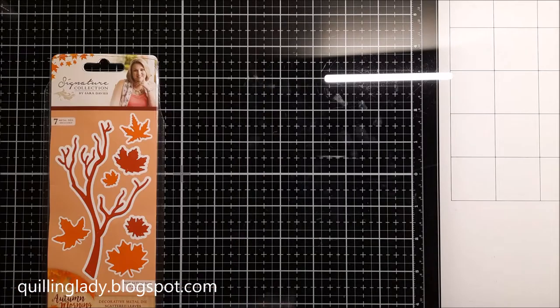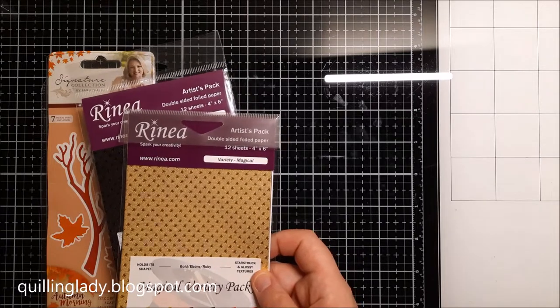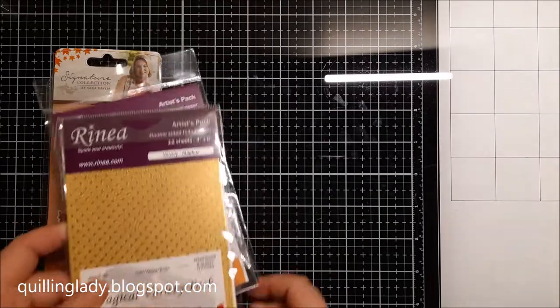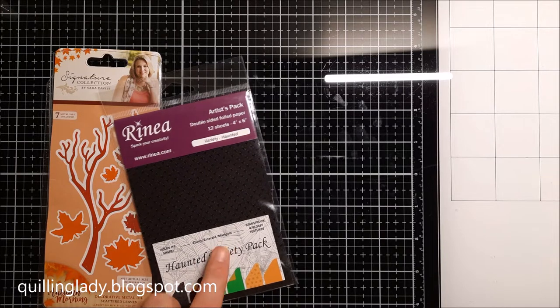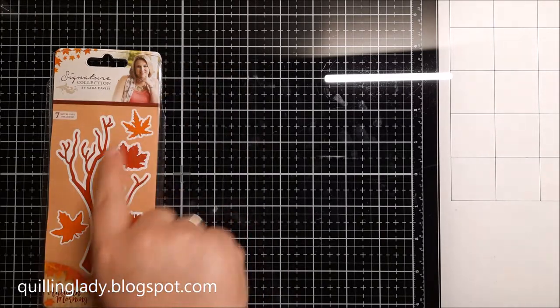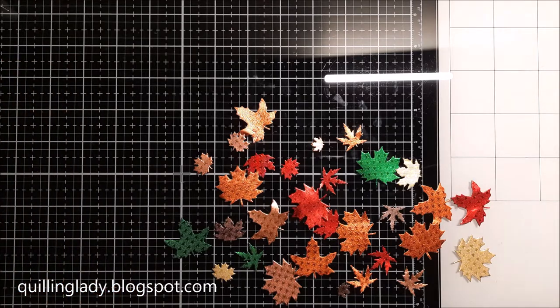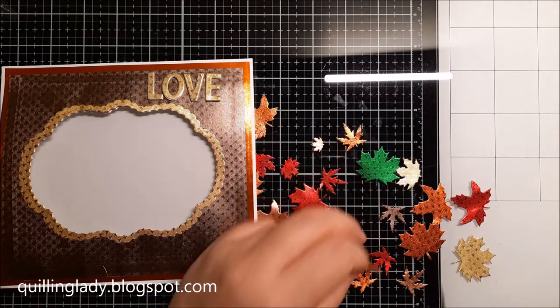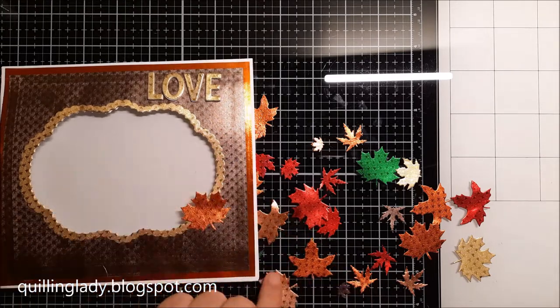Now using those beautiful scattered leaves from Crafter's Companion I'm going to die cut them from these small pieces of Rhenia foil paper. And what's absolutely amazing about Rhenia foil paper, you can actually put four or five papers together and die cut and it will die cut beautifully. I also die cut the tree but I didn't use it in my project. And on the back of every single leaf I put red liner tape and literally you just have to adhere and create any composition you want with those leaves and that's it.